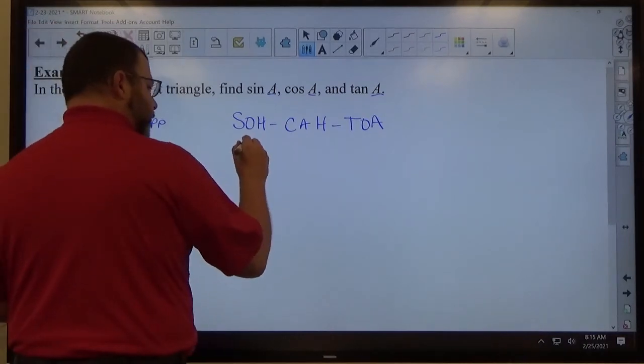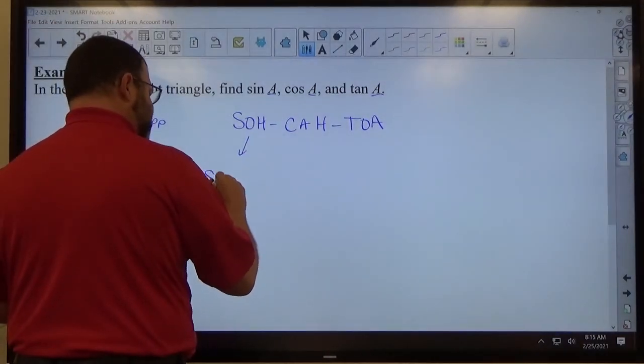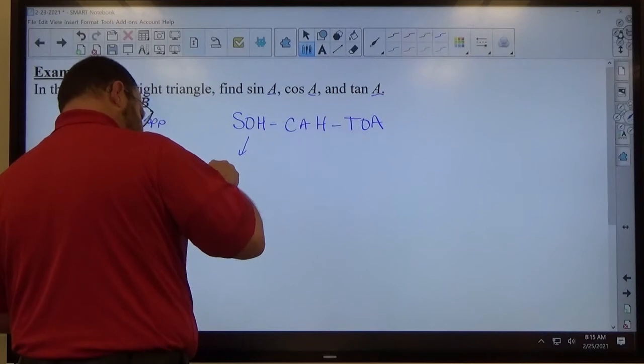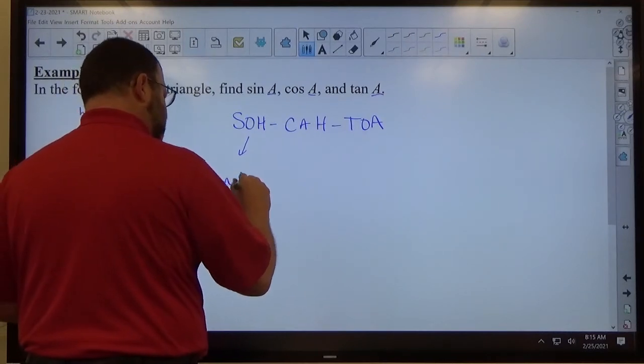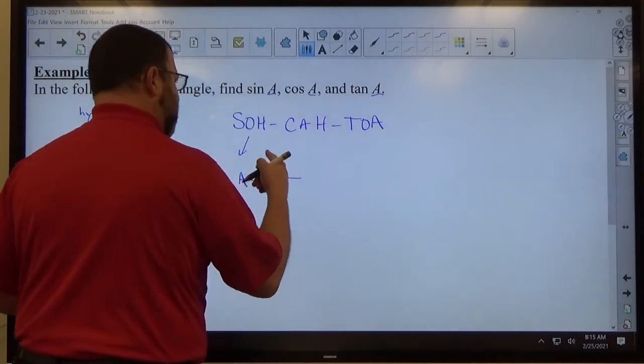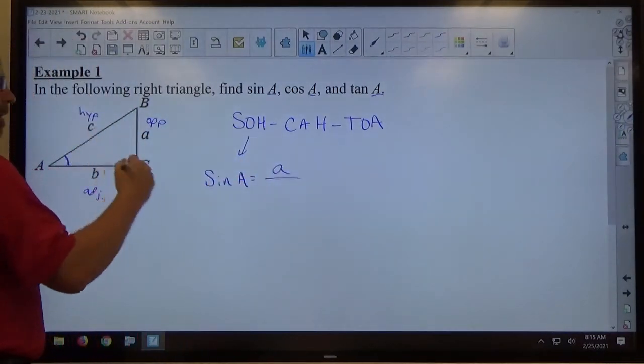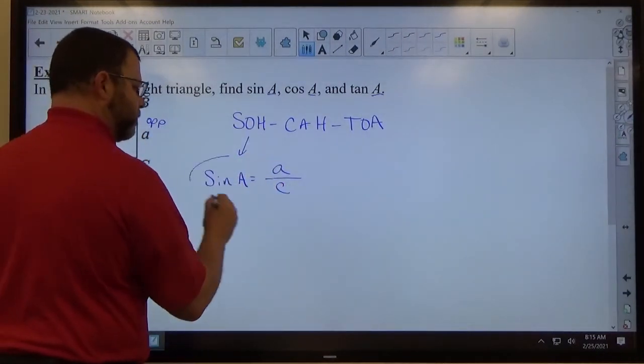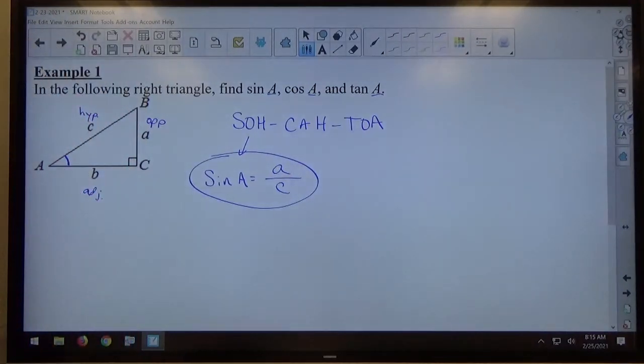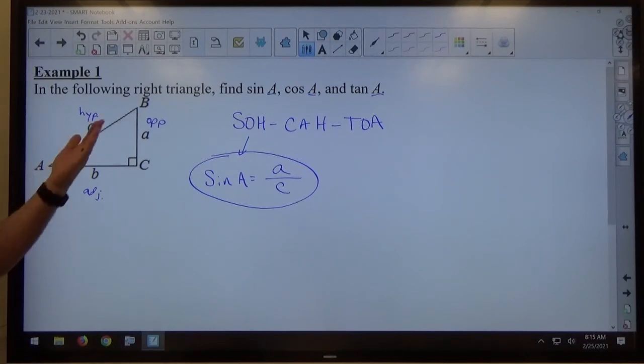Spelling it correctly matters because the letters all represent something. So the SOH part of SOH CAH TOA tells me that sine of A equals a fraction. That fraction is the opposite measure, which is a, over the hypotenuse, which is c. And I can't make a over c any prettier than that. That's the best I can do with what they've given me for a problem.